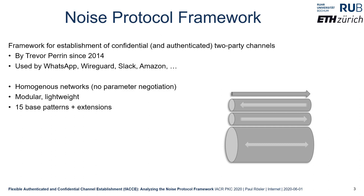It is developed for homogeneous networks, meaning all entities agree upon a set of parameters — there is no parameter negotiation as in TLS. It allows for modular extension and definition of patterns, and is very lightweight because it uses efficient building blocks like authenticated encryption, hash functions, and Diffie-Hellman groups. It contains 15 base patterns for specific features and properties that can be modularly combined.